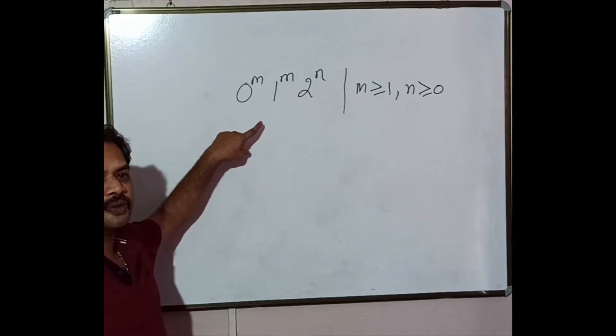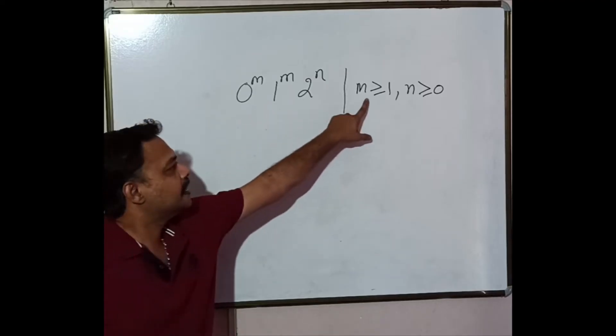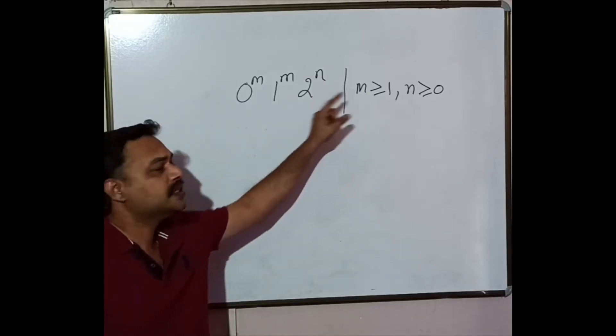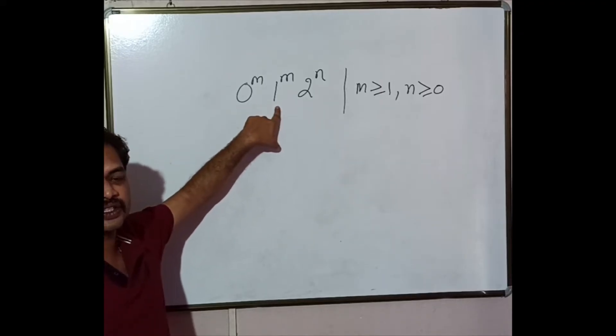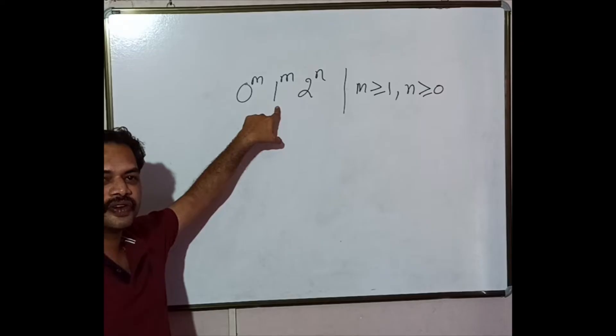Now looking at the problem statement, since m greater than or equal to 1, that means at least one occurrence of 0 and 1 should be there in the language set or the string generated by this context free grammar.